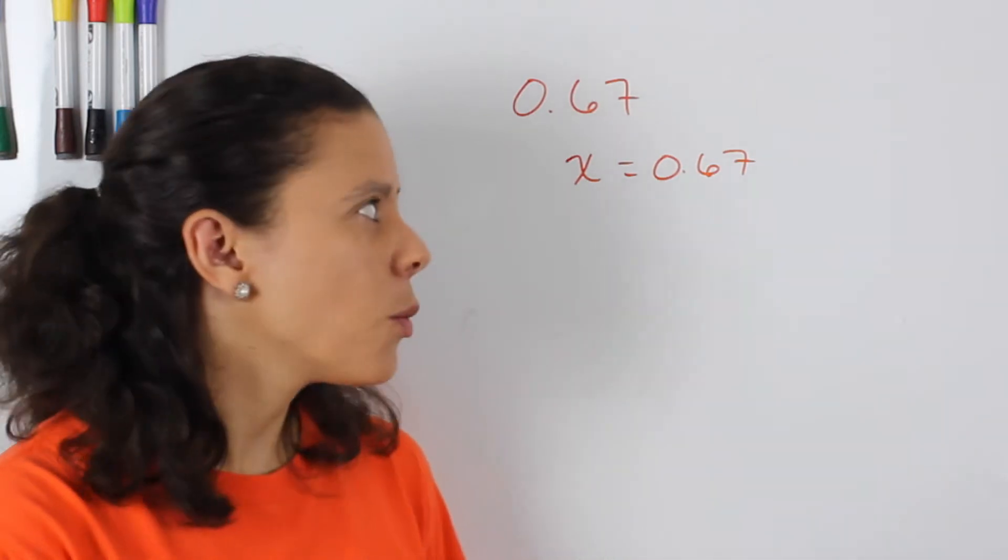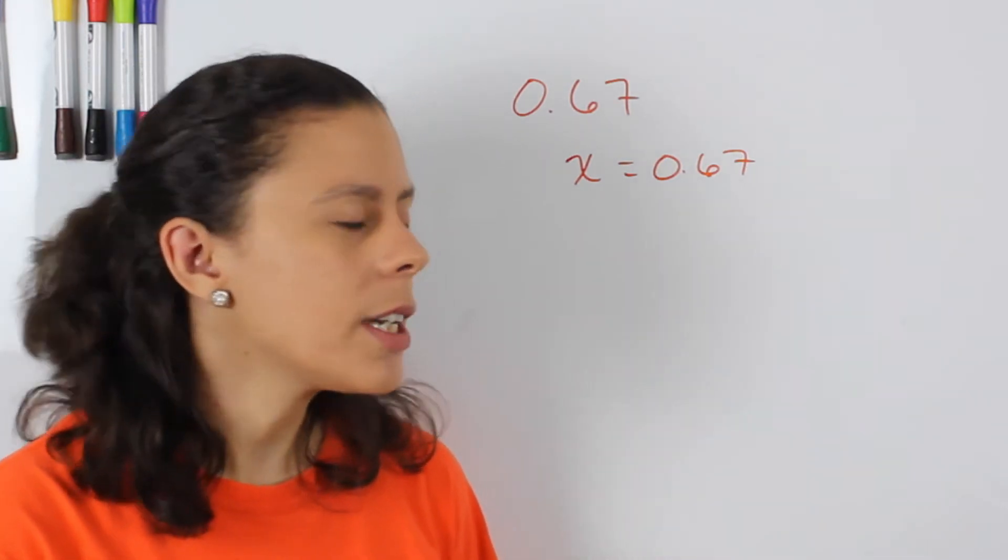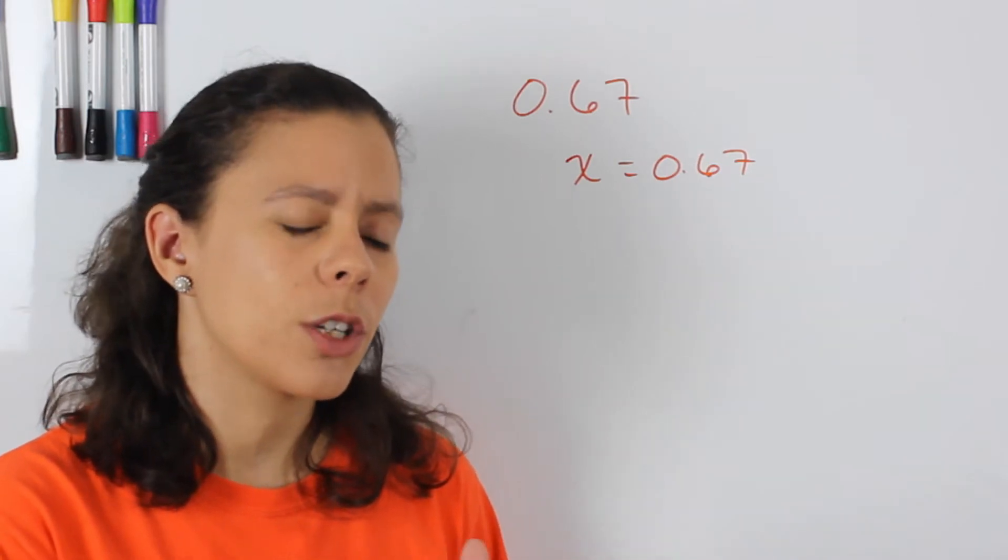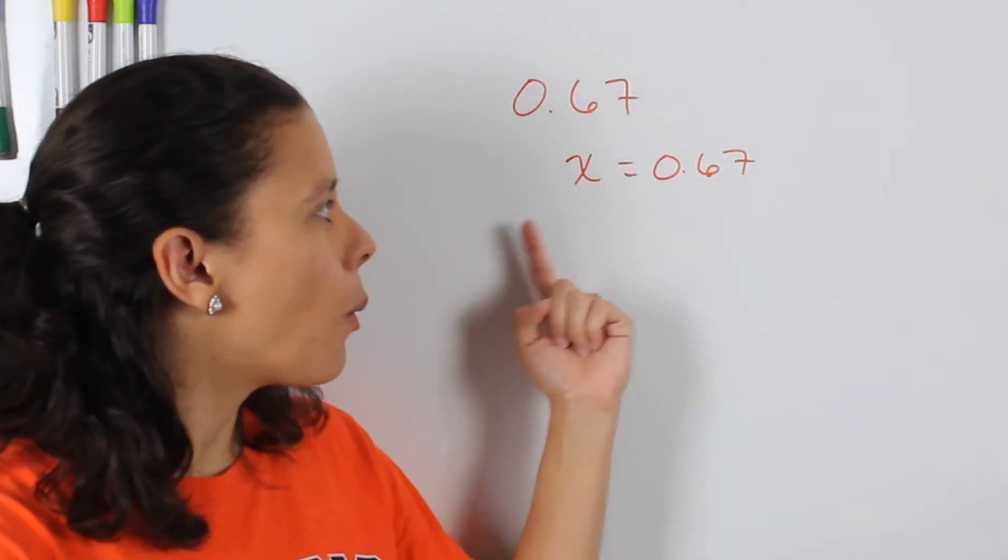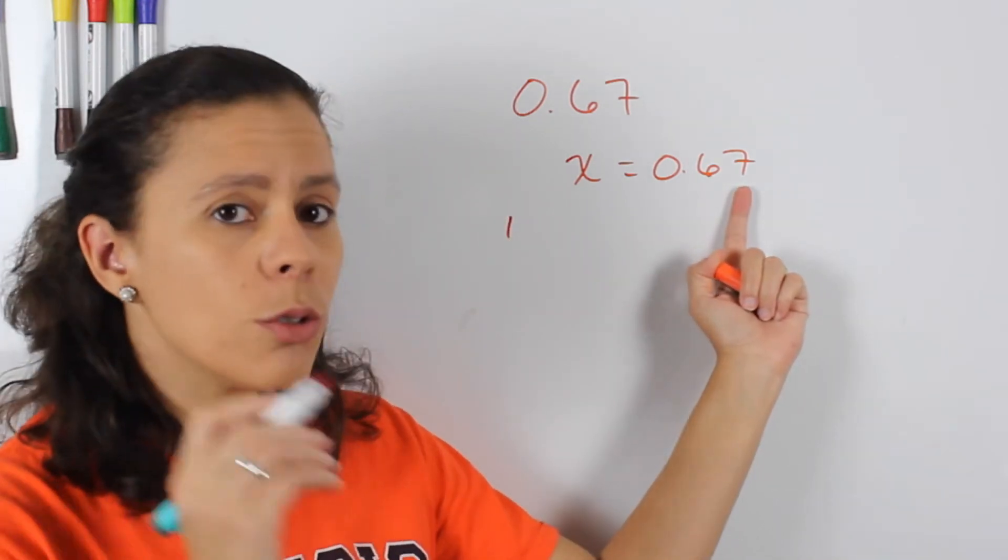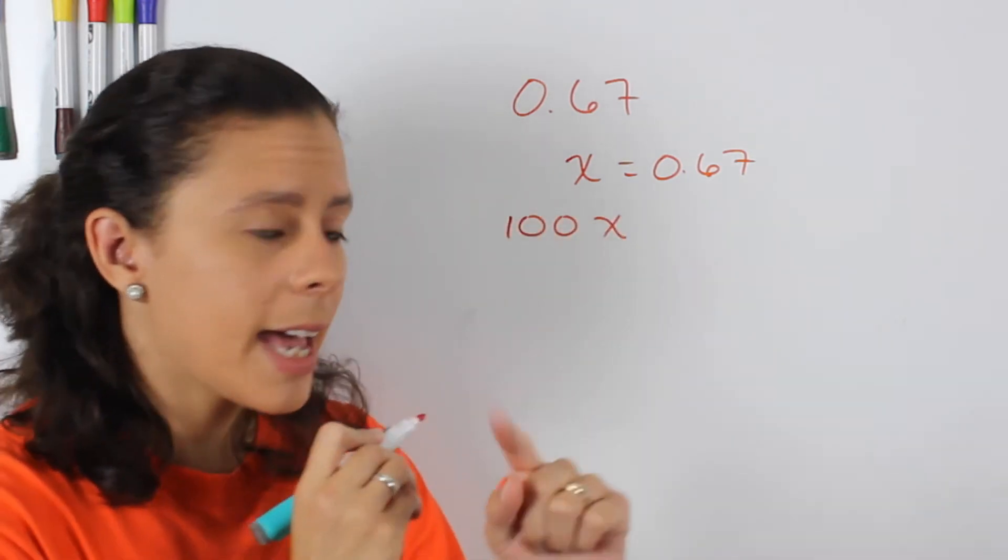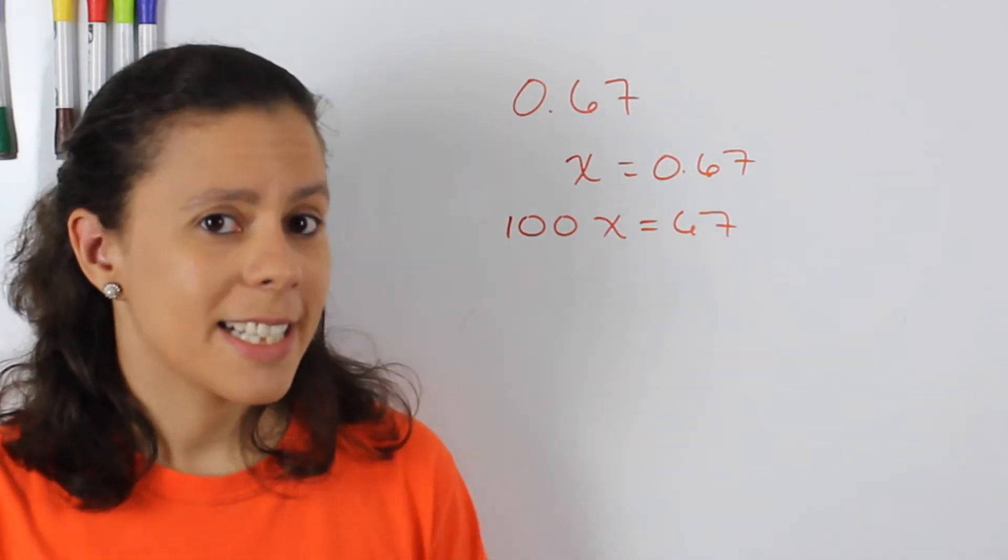And the way that we're going to do that here is we're going to multiply by 100. Why 100? Because for every zero that you multiply by, what you're really doing is you're moving the decimal point forward. So I want to multiply by one with two zeros. So 100x is going to be equal to 67.